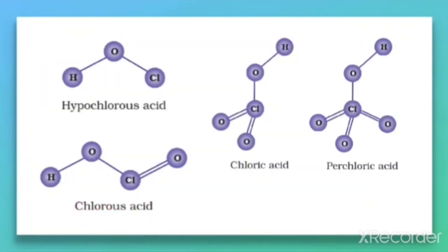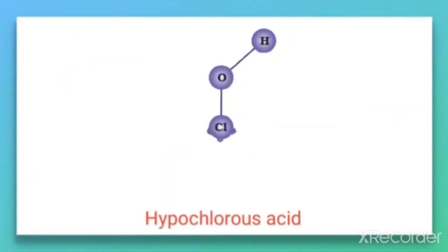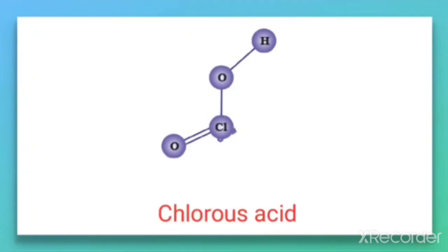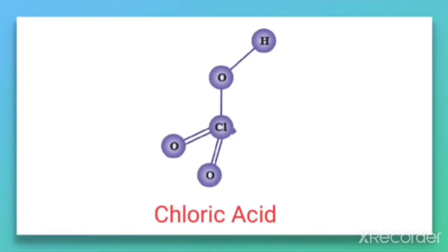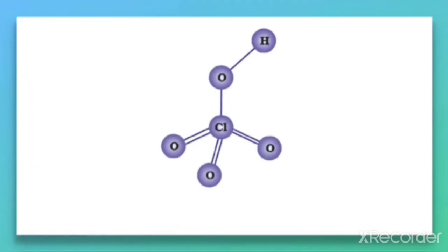Now let us discuss the structures of these acids: hypochlorous acid, chlorous acid, chloric acid, and perchloric acid. It is important to learn these structures. To draw them easily: first make hypochlorous acid as H-O-Cl. Then add a double-bonded oxygen on the chlorine to get chlorous acid. Add one more double-bonded oxygen on the chlorine to get chloric acid.